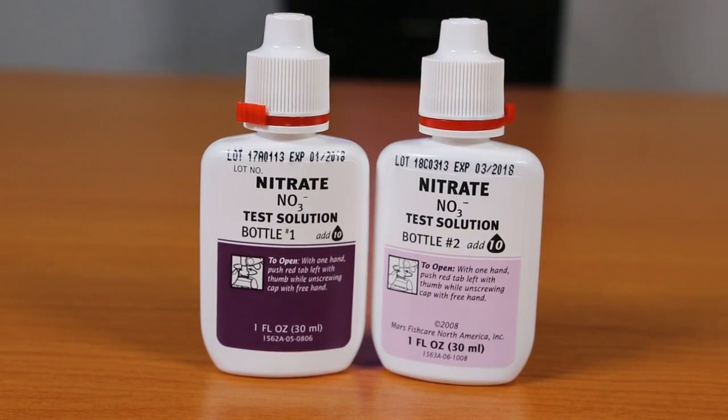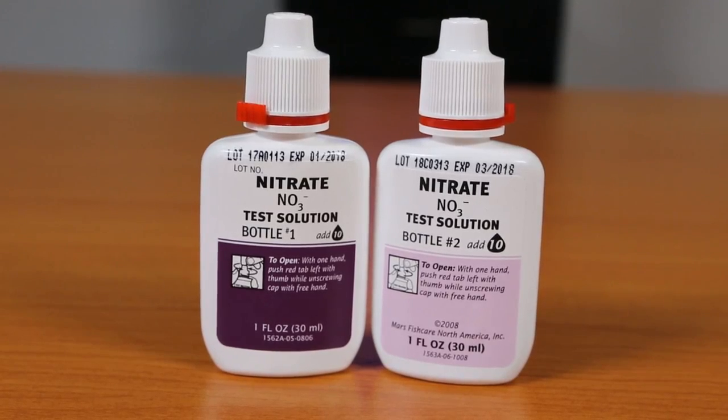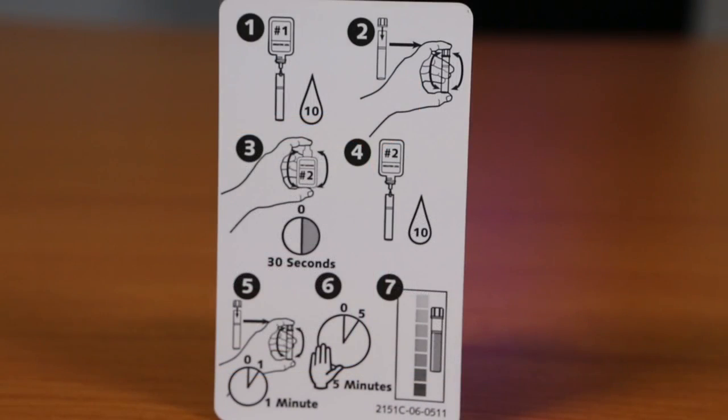The Nitrate Test uses two bottles of test solution. It is very important to follow the test instructions in order to obtain an accurate reading. Testing instructions can be found in the manual and on back of the color cards.